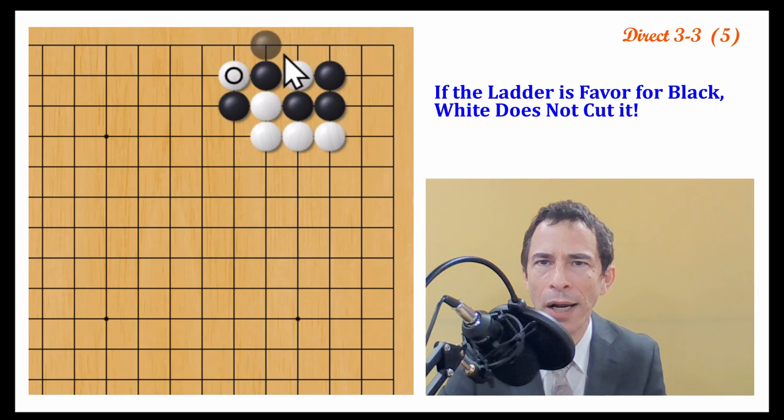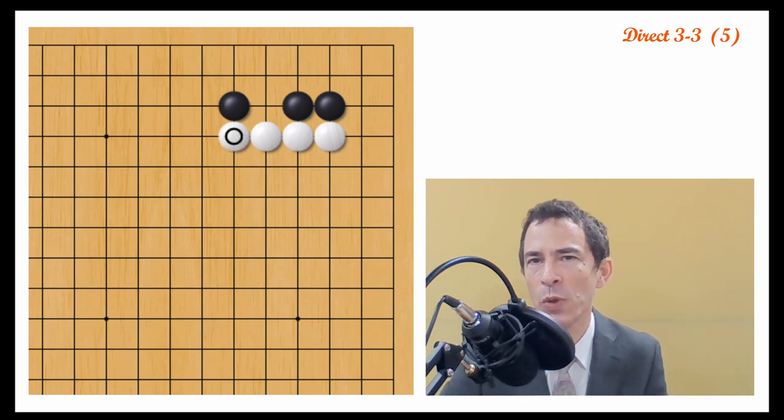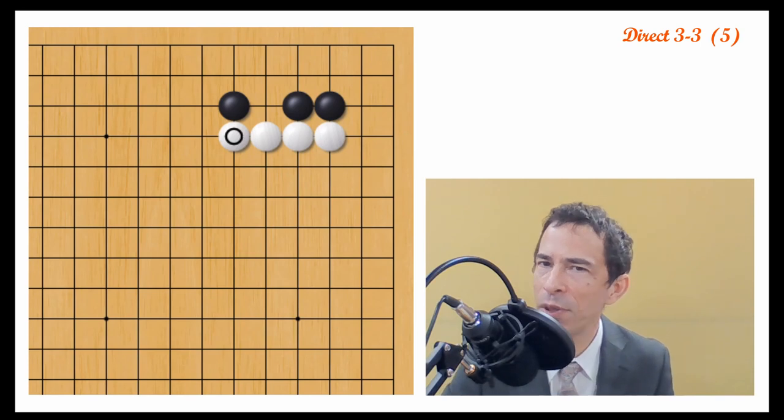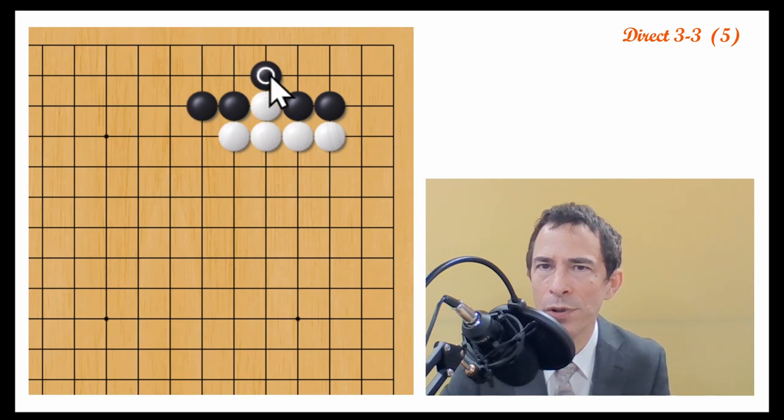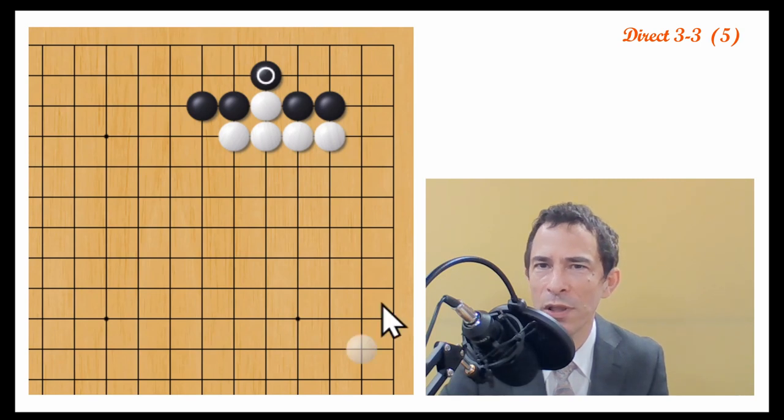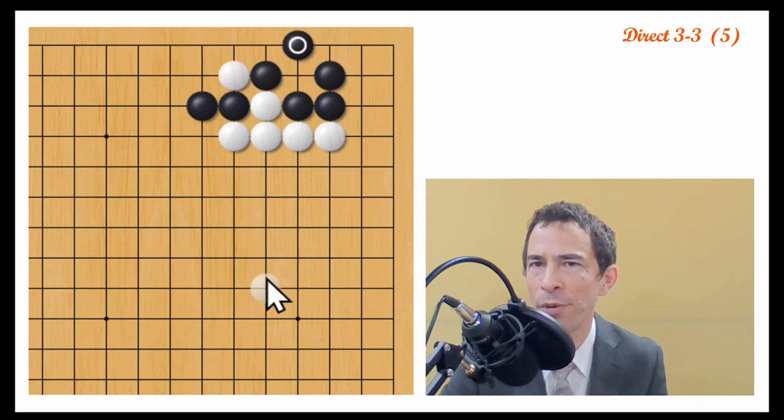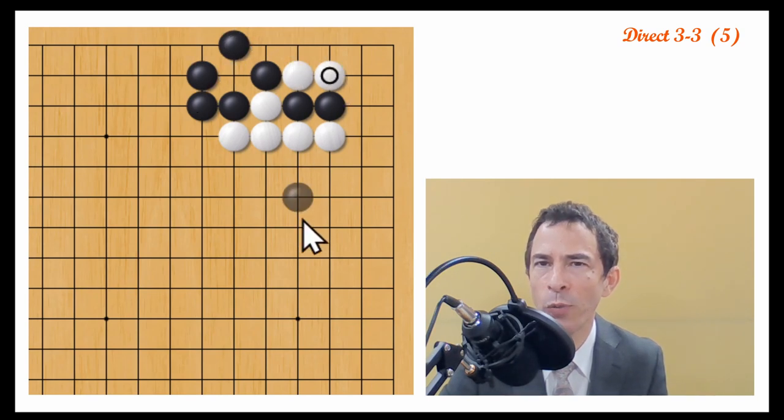So if the ladder favors black, maybe white's not going to do this. So white's other option would be to push once. Now pushing once here is maybe the main line move here. When white pushes here and black extends, now white can push through and cut on this side. And why this side? There's a good reason, but first we'll look at the other side. If white cuts on this side, then this variation will happen anyway. Now if white pushes on this side, does black take the one stone in this case? Actually in this case,